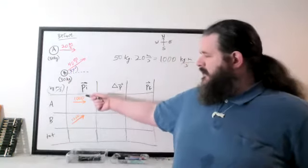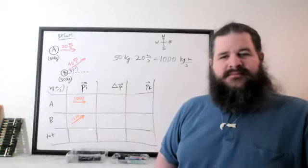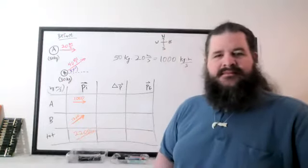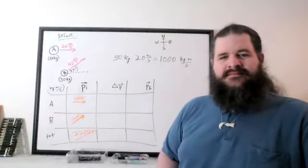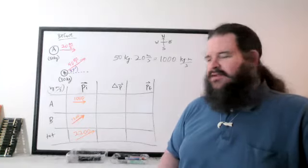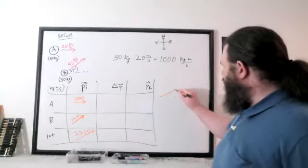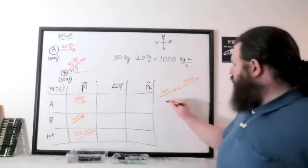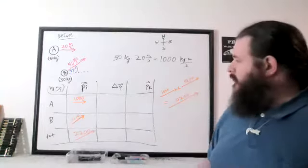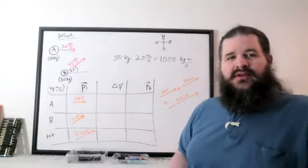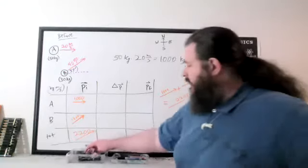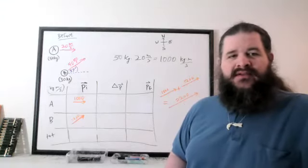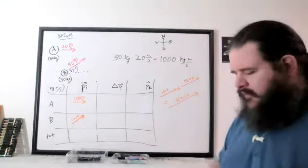Can we just add 1000 plus 1200 to get 2200? No, that doesn't work — they're not in the same direction. If they were in the same direction, the result would just be 2200 in that direction. But since they're not in exactly the same direction, we can't add the magnitudes. The best way to add these vectors is by splitting them into x and y components, then adding the x components together and the y components together.